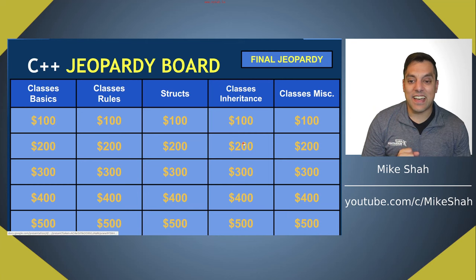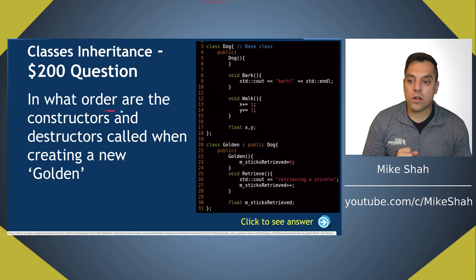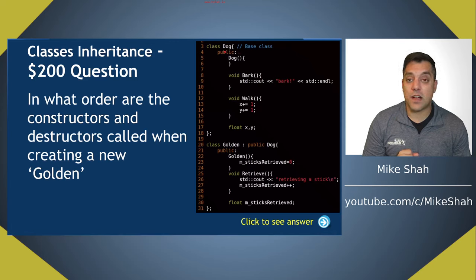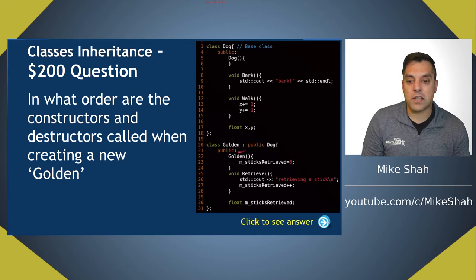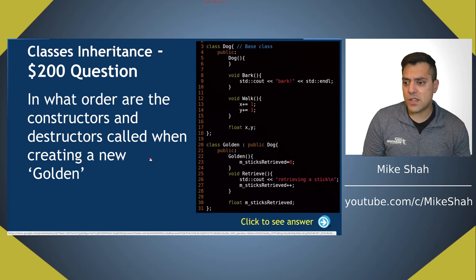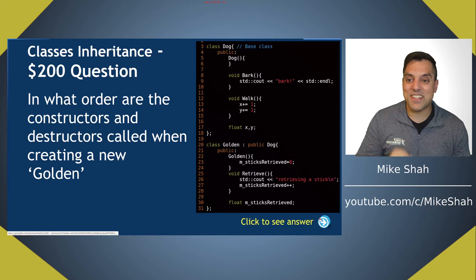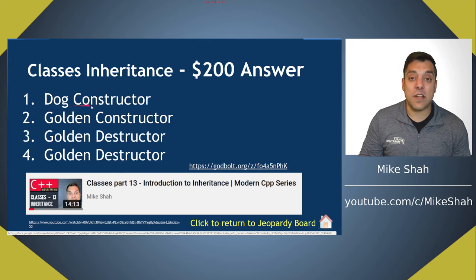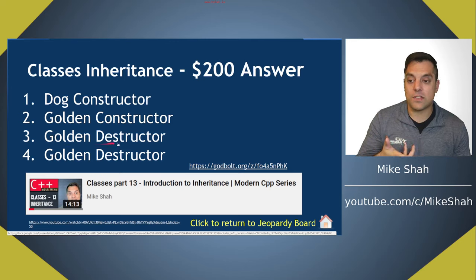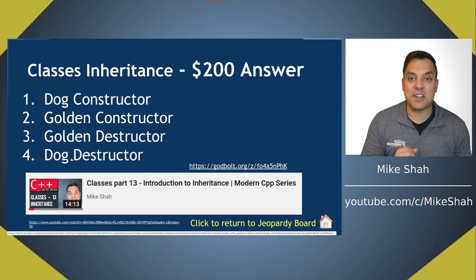For 200: in what order are the constructors and destructors called when creating a new Golden? We have a Dog class with a constructor and compiler-generated destructor, and Golden derived from Dog. The dog constructor is called first because it's the base class, then the golden constructor. Destruction happens in reverse order: we destroy the golden first, then the dog.